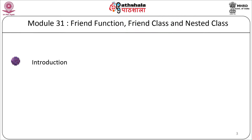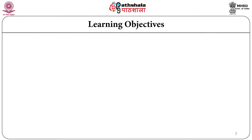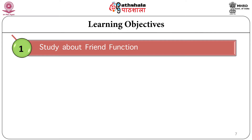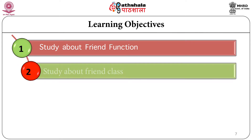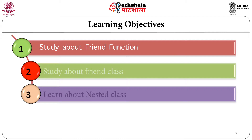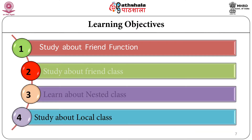One important concept of object-oriented programming is data hiding - a non-member function cannot access the private and protected data of the class. But many times there are situations where we need to access this private data. It is possible with the help of a friend function and friend class, which is a built-in mechanism in C++ to access private or protected data from non-member functions. We will study friend functions, friend classes, nested classes, and local classes.